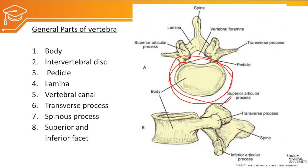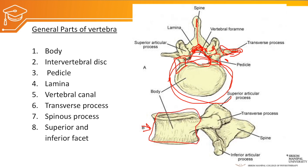The body of the vertebra is the anterior part. The pedicle starts posterior to the vertebral body bilaterally and continues as a lamina. The laminae come and join to form the spinous process posteriorly. We also have the superior and inferior articulating facets. Between the body and the anterior arch of the lamina we have the vertebral canal. From the lateral view, you can see anteriorly the body of the vertebra, the transverse process, and just behind it the superior and inferior articulating facets. The lamina is the continuation of the pedicle, and posteriorly we have the spinous process.